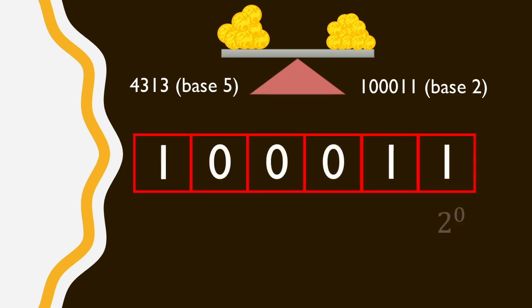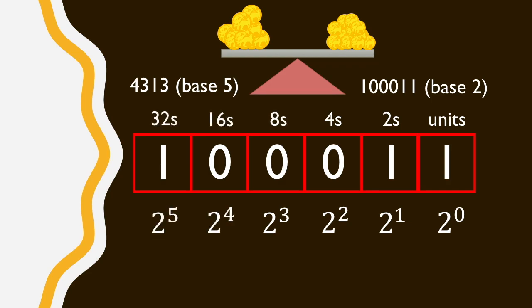1, 0, 0, 0, 1, 1 means 1 times 2 to the 5 plus 0 for 2 to the 4s, 0 for 2 to the 3s, and 0 for 2 to the 2s. So we just add 2 times 2 to the 1 plus 1, or 32 plus 2 plus 1, which gives us 35. So it's actually much smaller than the base 5 number.